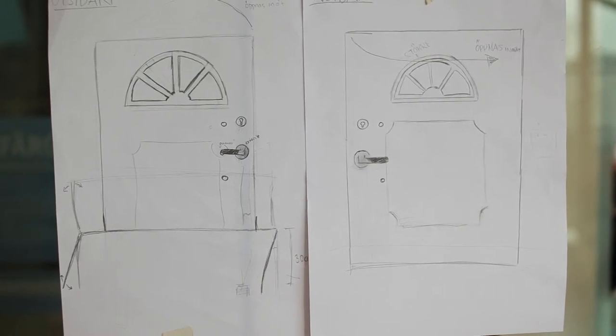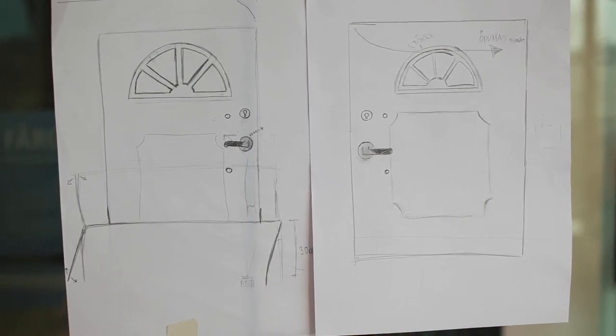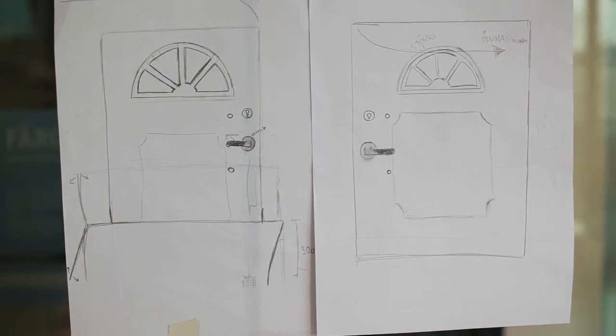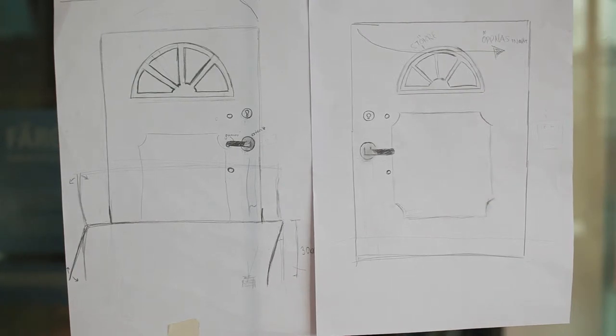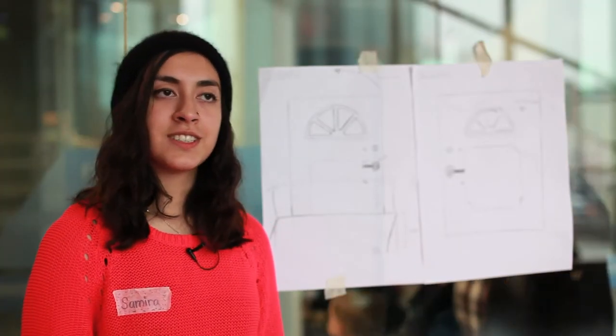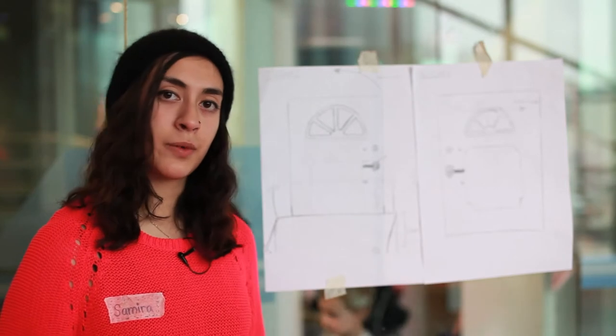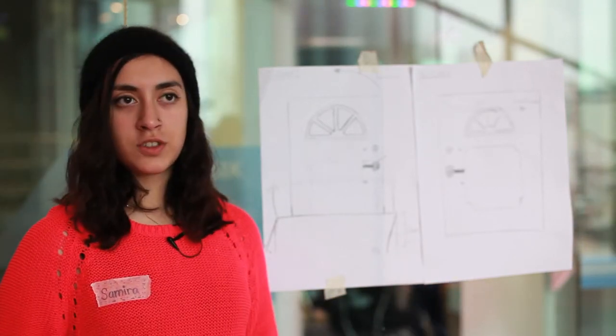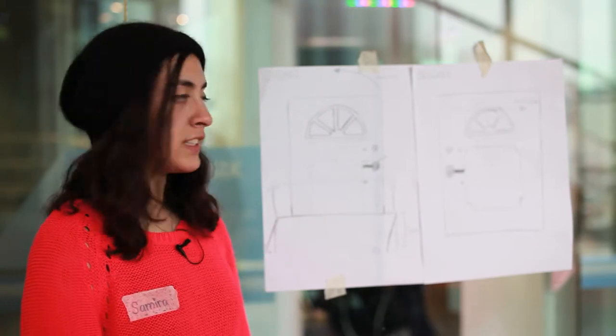The doors got two peepholes, one for grownups and one for children, not only for them to see who's come to visit them, but also so they could see the water levels so the children could see for themselves when it's time for when it's okay for them to step outside and play or if it's too much water, they'll stay inside.